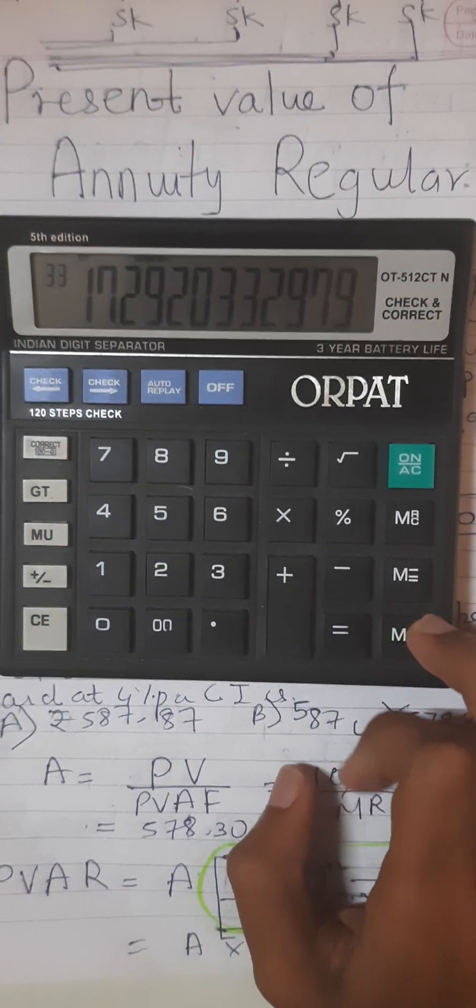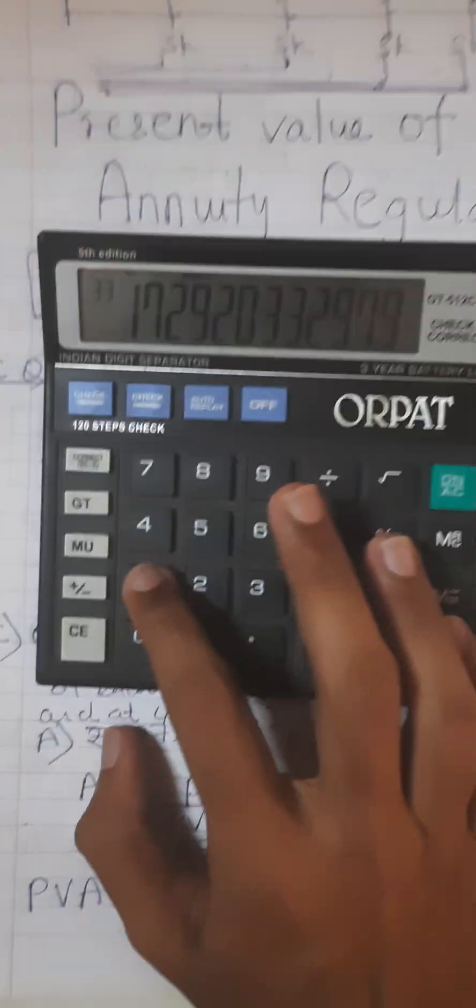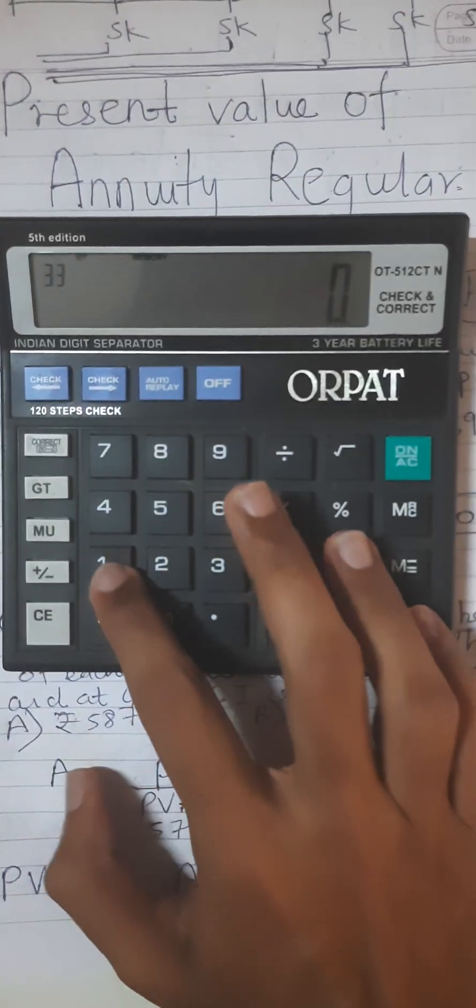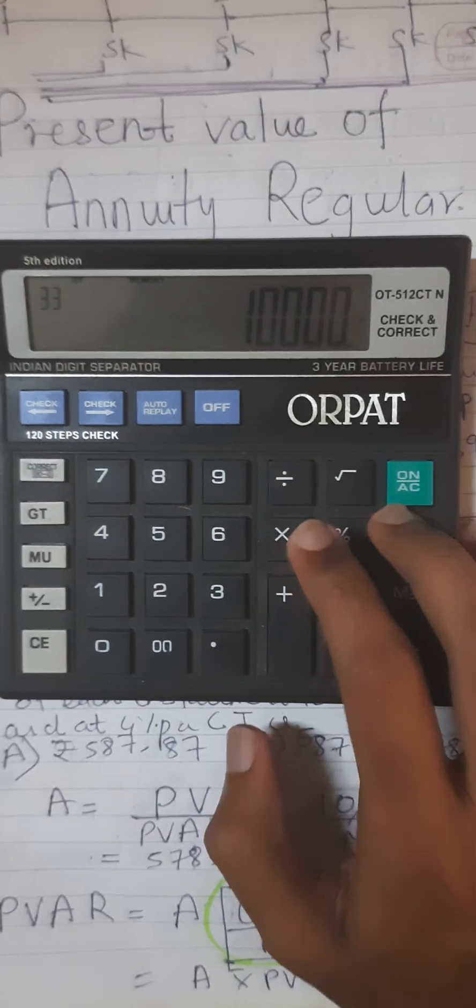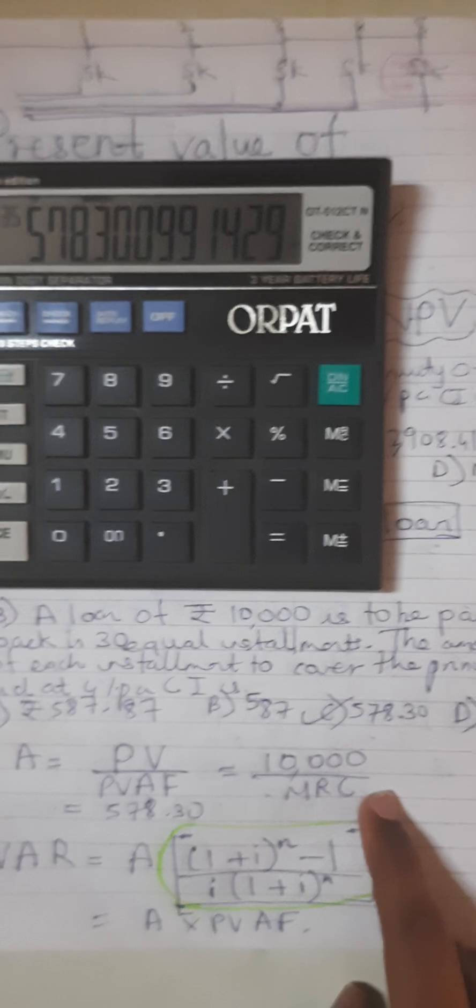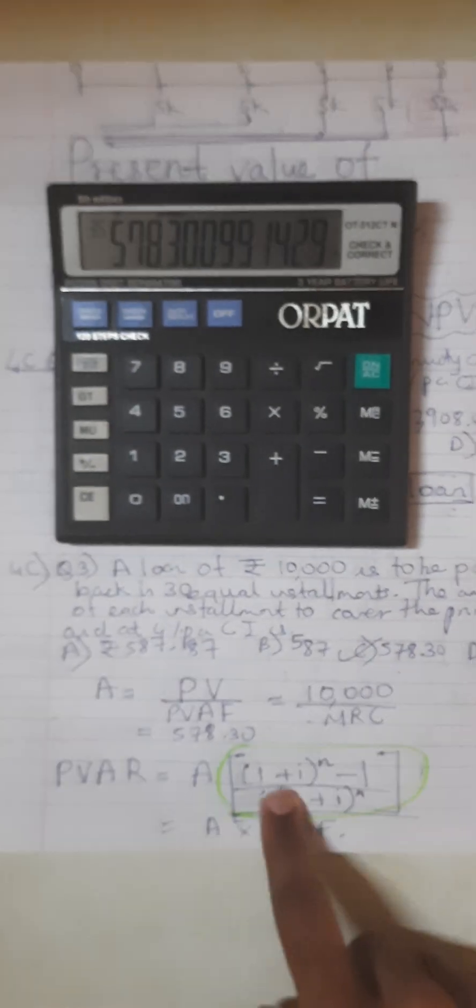So this is the answer that we get. Now M plus this - the loan amount is rupees 10,000. So we get 10,000 divided by MRC equals, and we get the answer as 578.30. This is option number C.